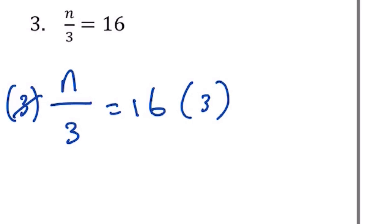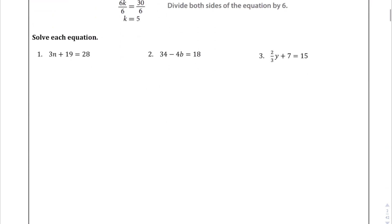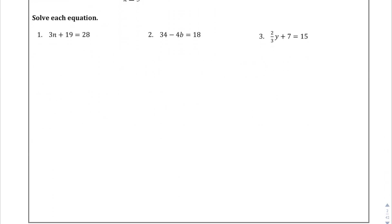And that way this will go away and I'm left with n equals 48. Okay, here's a whole new set of equations. These are apparently two separate questions. We have 3n plus 19 equals 28.